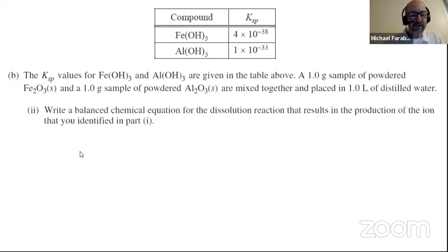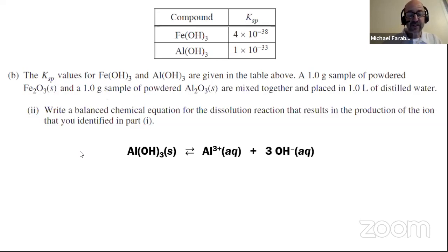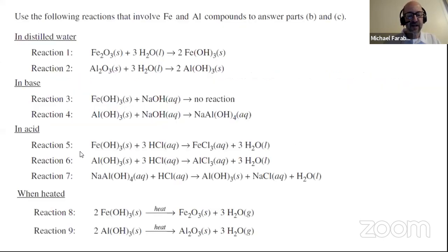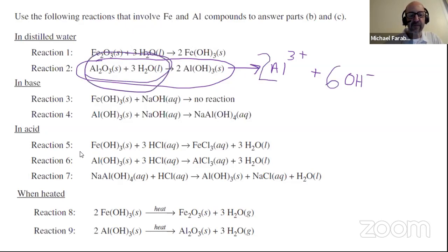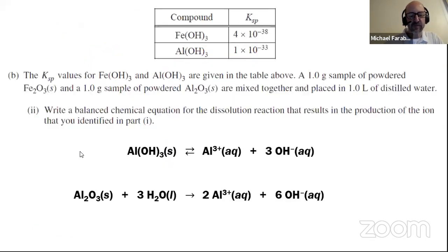Part B, Roman numeral II: write a balanced chemical equation for the dissolution reaction producing the ion chosen in part I. Since we chose aluminum, the equation would be the dissolution of aluminum hydroxide into aqueous ions. There was also another acceptable answer: aluminum oxide reacting with water to form aluminum hydroxide, then dissolving to give two aluminums and six hydroxides. Both were listed on the official scoring guidelines as correct.